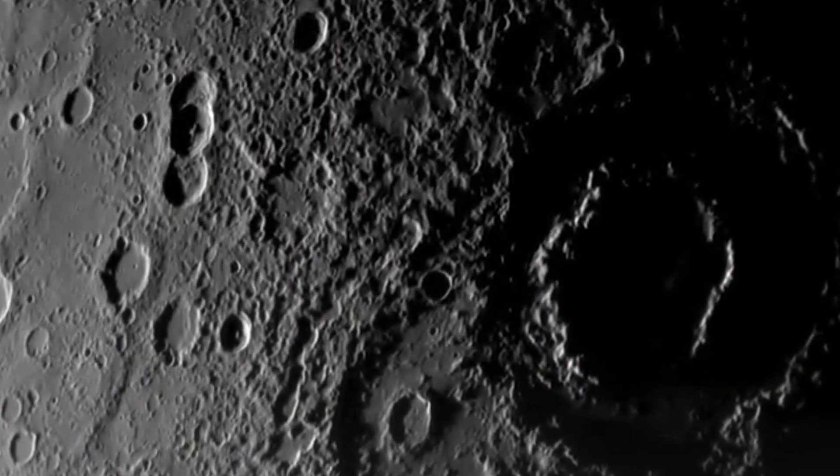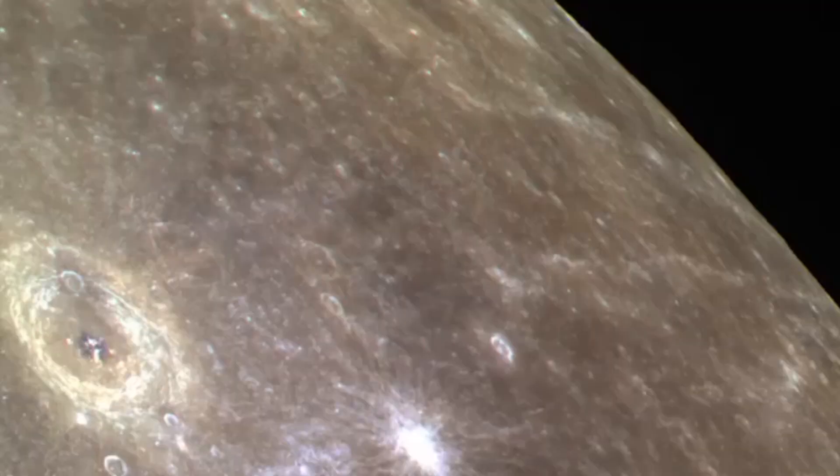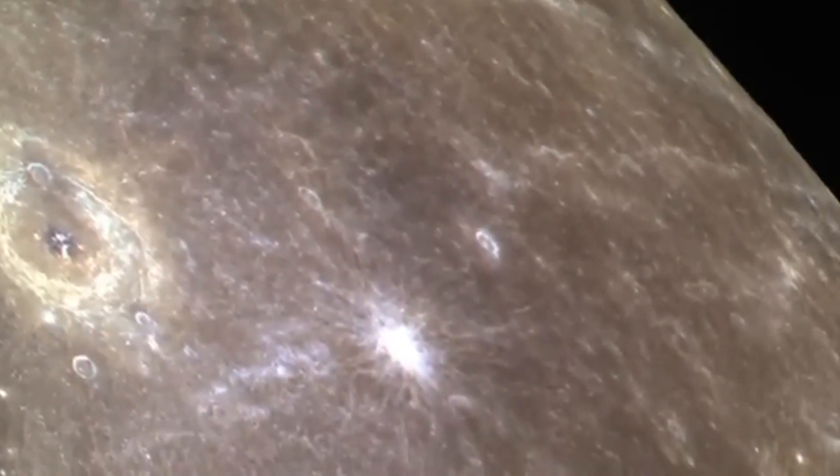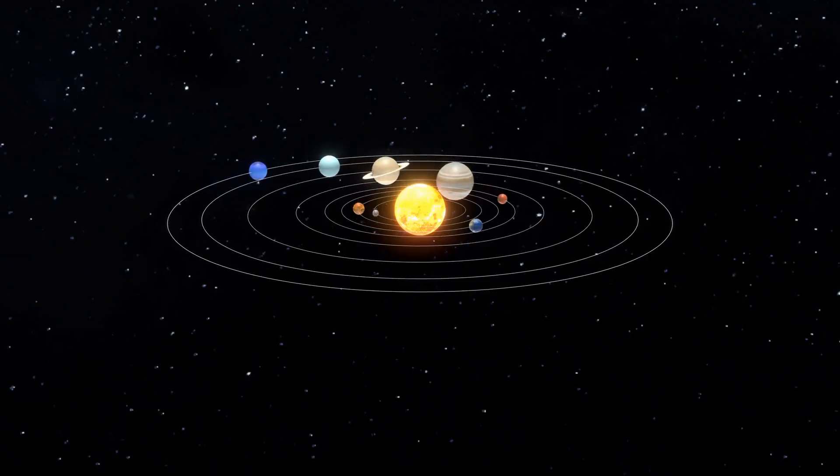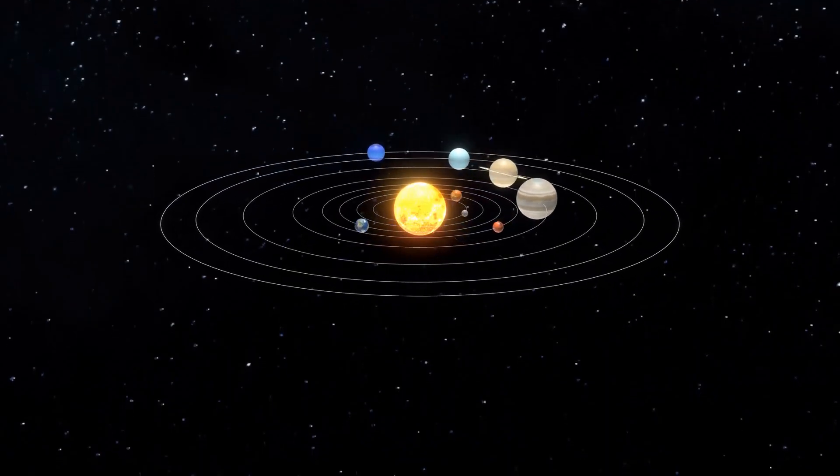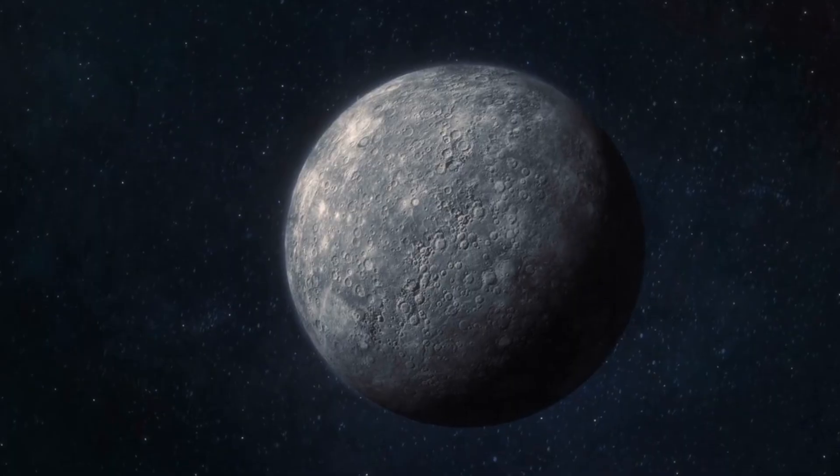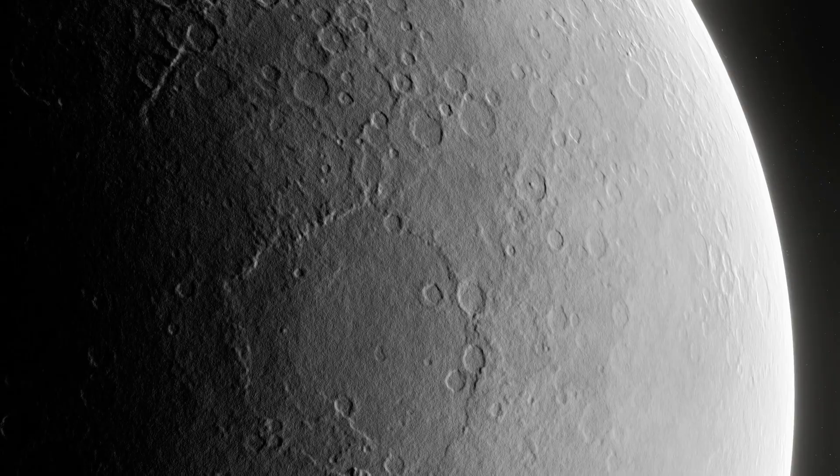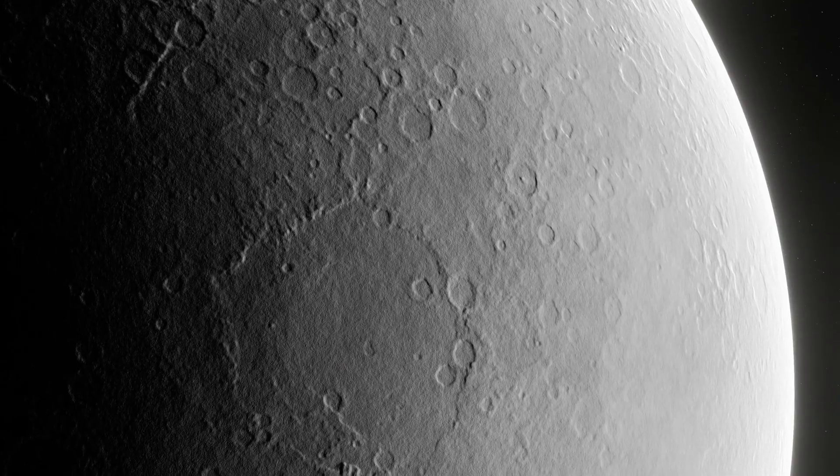If you stood on Mercury's surface, you'd witness a bizarre solar display. The sun would rise, grow larger in the sky, and move slowly across it. At one point, the sun would appear to stop, reverse direction briefly, and then resume its original path. This strange solar motion is due to Mercury's slow rotation.